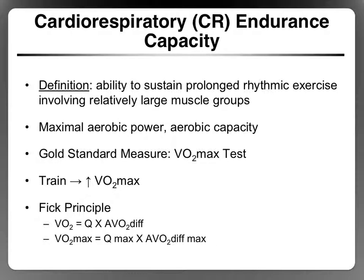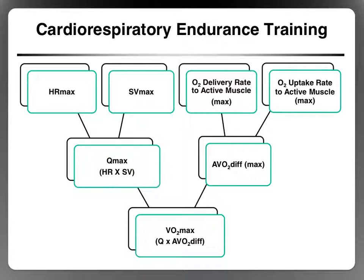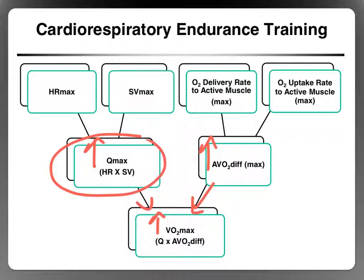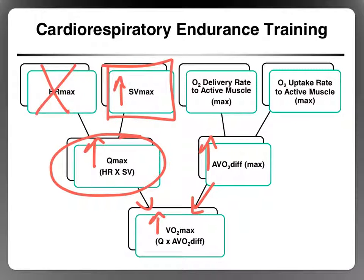Recording number 4, focusing on the increase in VO2 max that occurs with cardiorespiratory endurance training. Increases in VO2 max are due to increases in cardiac output max and the arteriovenous oxygen difference max. We're still focusing on cardiac output right now. Heart rate max does not change with training, but stroke volume max does, and that's what we've been focusing on so far.